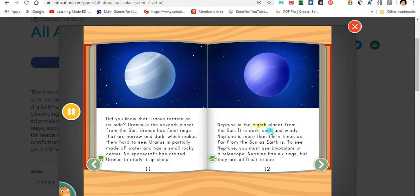Neptune is the eighth planet from the sun. It is dark, cold, and windy. Neptune is more than 30 times as far from the sun as Earth is. To see Neptune, you must use binoculars or a telescope. Neptune has six rings, but they are difficult to see.